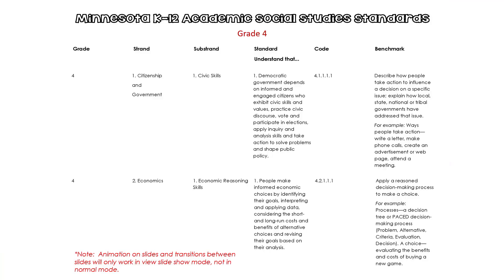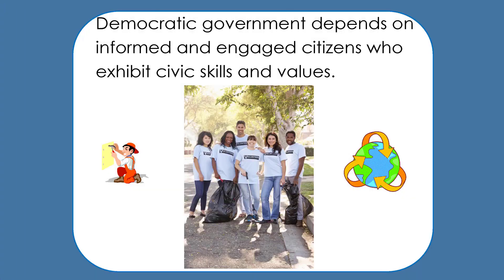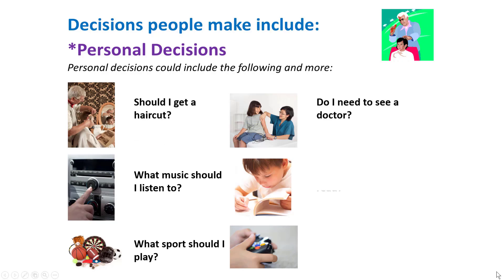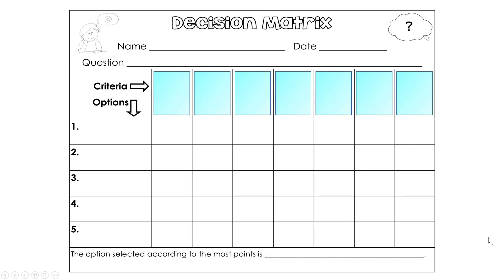I've based this lesson on Minnesota Common Core standards because the general Common Core standards for social studies are not yet ready. There's a PowerPoint that has animation and there is a PDF included. Students learn a decision-making model called a decision matrix.